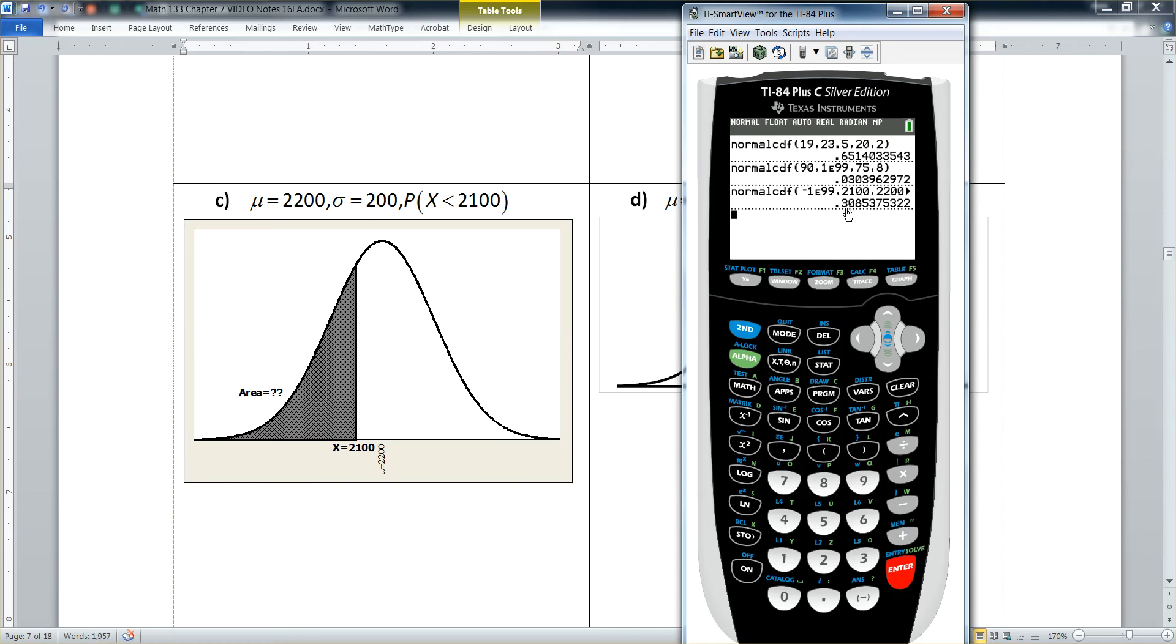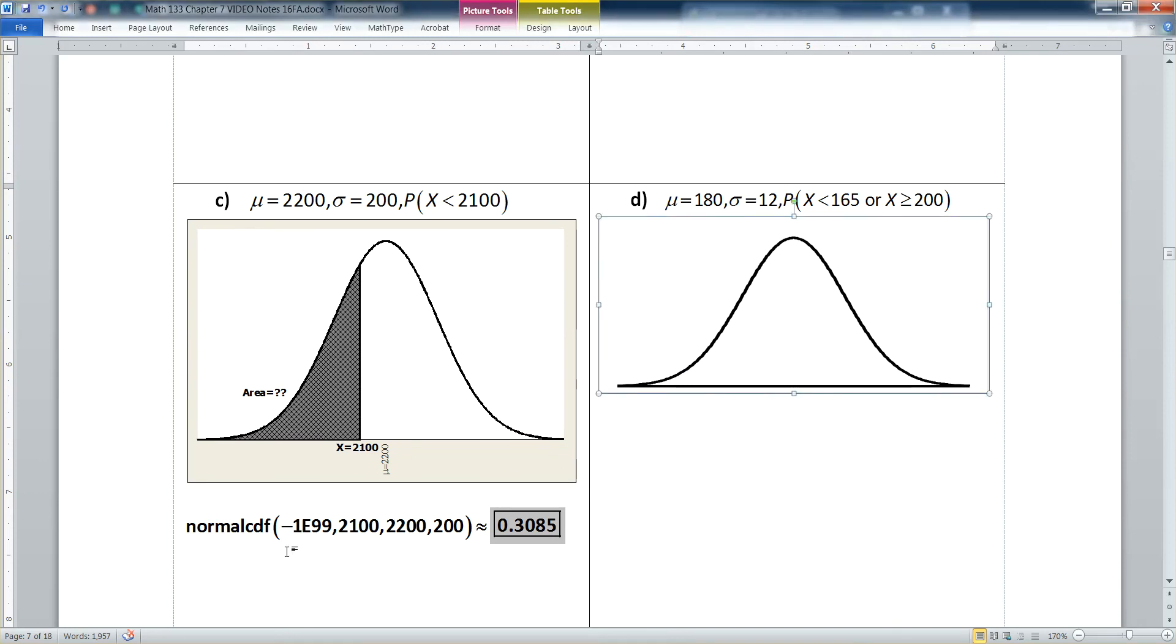And that tells you that, hey, there's that 0.3085 that we ran into in the previous section. I was not lying to you. It really is 0.3085. And there is your work for the problem by writing out normal CDF and you write exactly what you typed negative one E 99. Remember that E stands for times 10 to the, scientific notation actually stands for the word exponentiate. Meaning you want exponents times 10 to the right 2100 2200 200 and you get 0.3085. And now you know, I did not lie to you in regards to that giraffe problem a few pages ago.